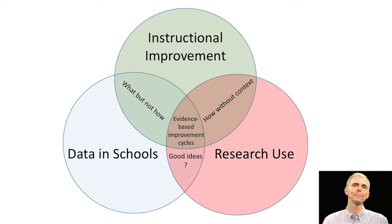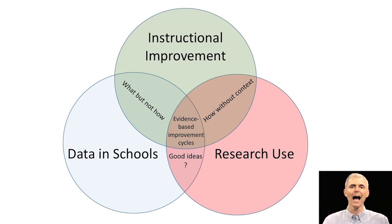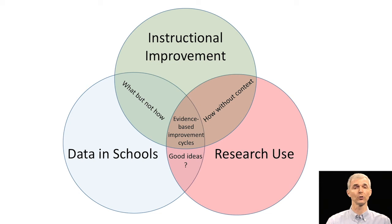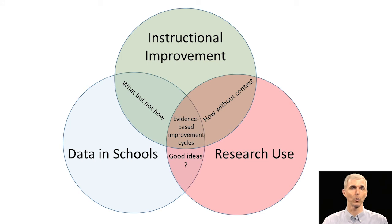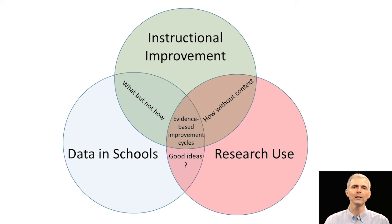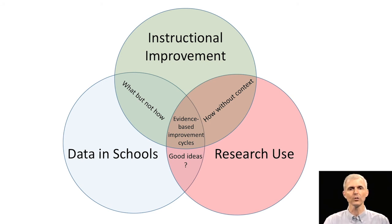Research use overlapped with instructional improvement — where we're missing the data in schools — I describe as 'how without context.' We may have an intervention that works for specific students in specific places toward an instructional improvement goal, but we might not have the data showing the extent to which that intervention would work in our school. Using data in your school is about seeing your students and understanding the very specific issues they have.